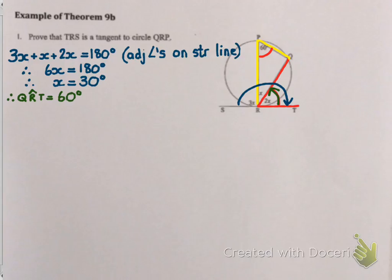So angle QRT equals 60. Sorry I said 30. So 2x would be 60 degrees. Now this is perfect.